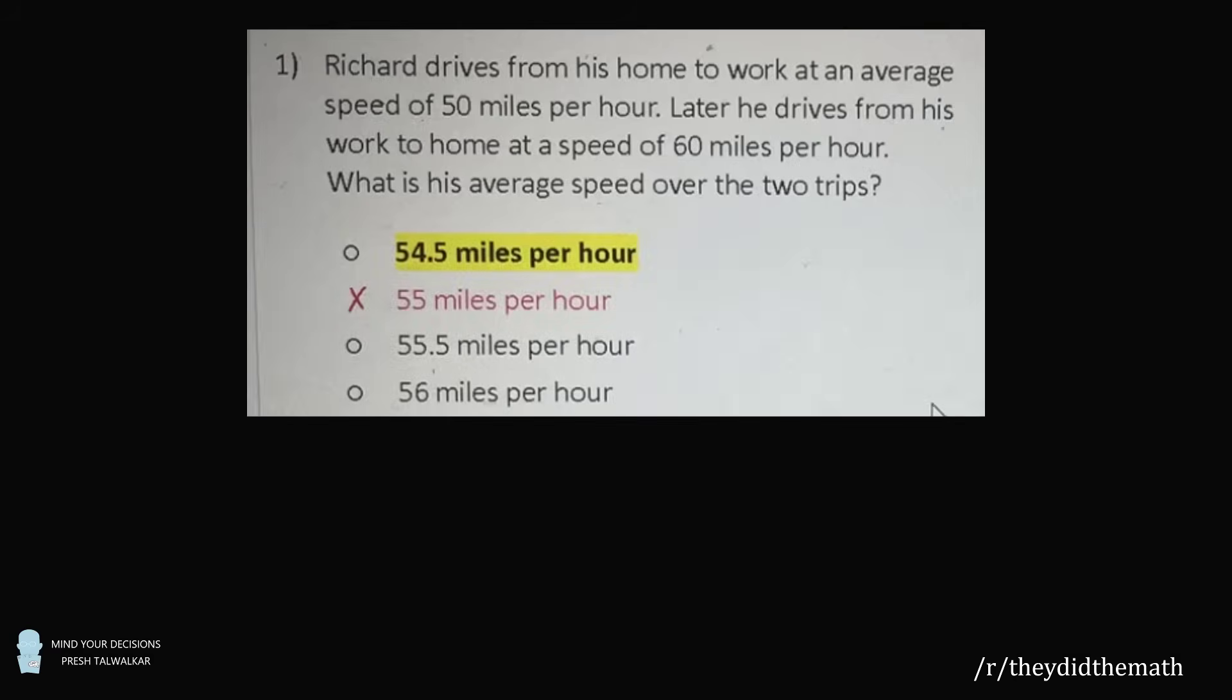The person who posted the problem had given an answer of 55 miles per hour, but the correct answer was said to be 54.5 miles per hour. The person wondered, is this really the correct answer? In short, yes, that is the correct answer.